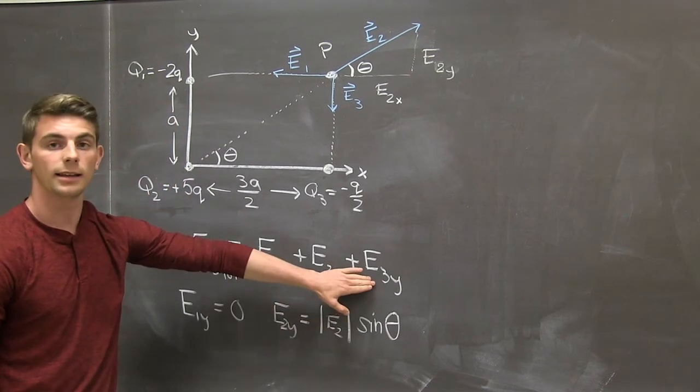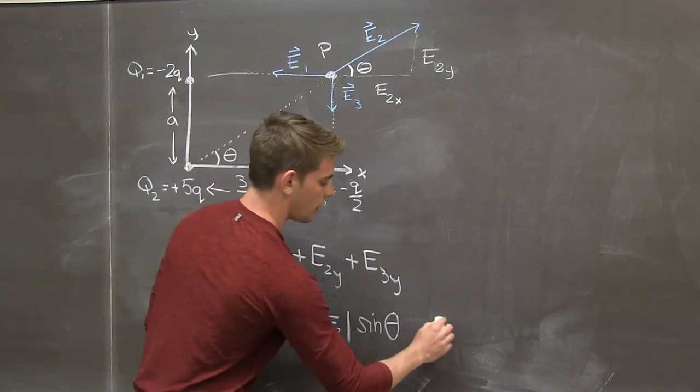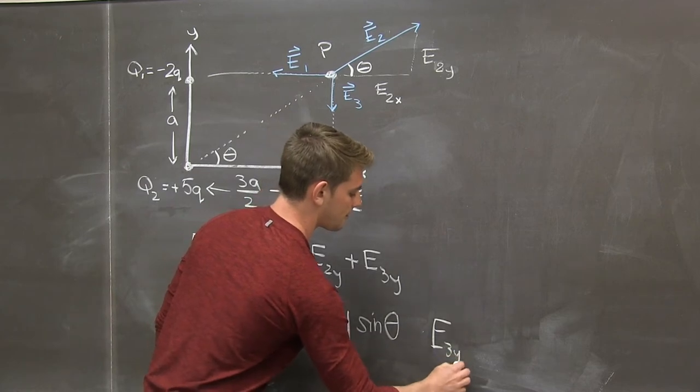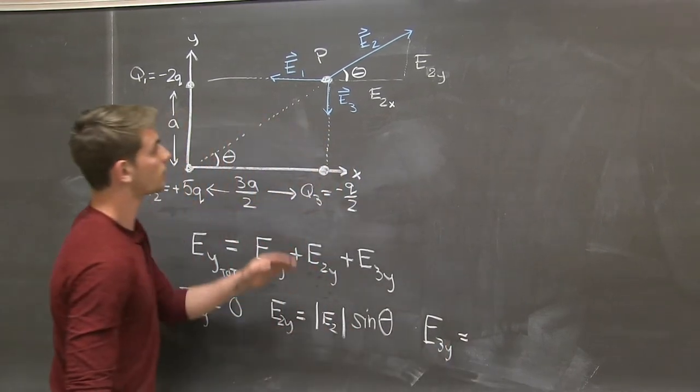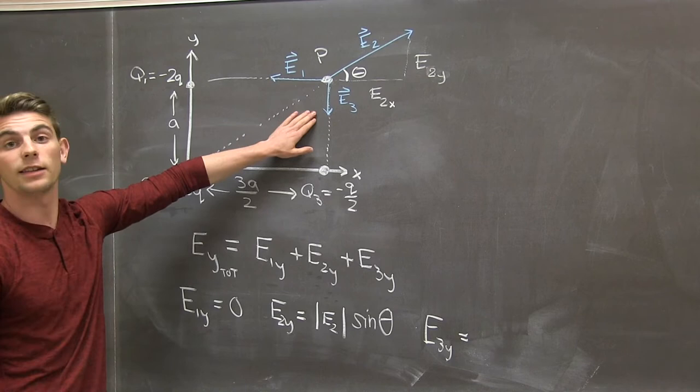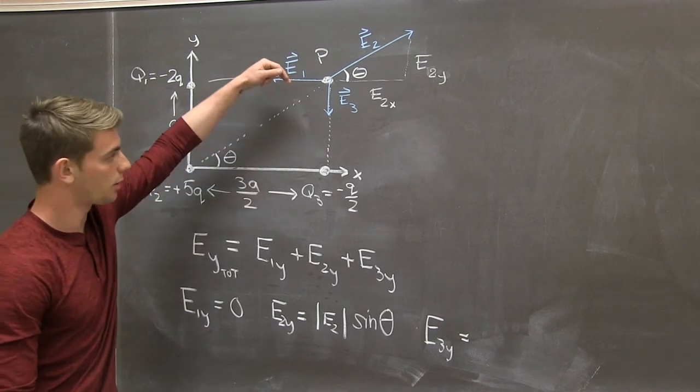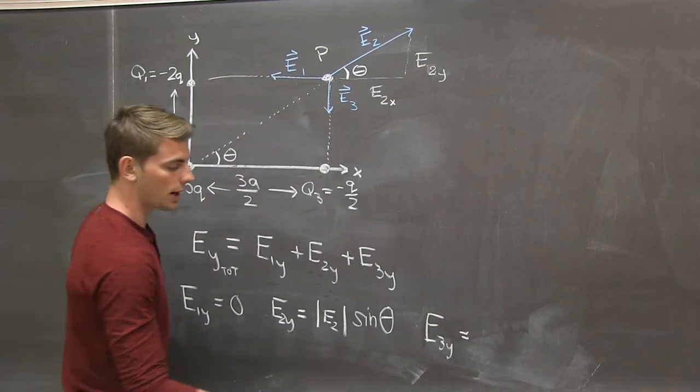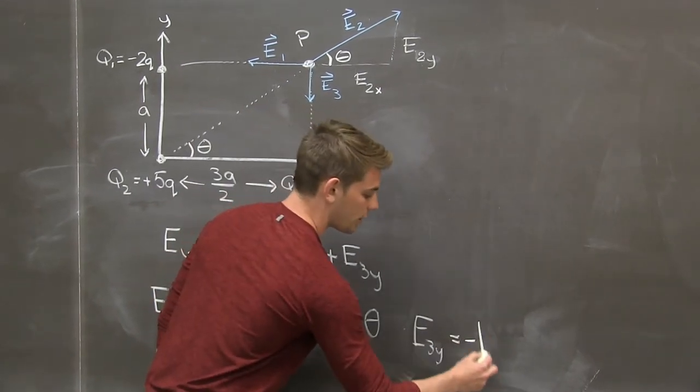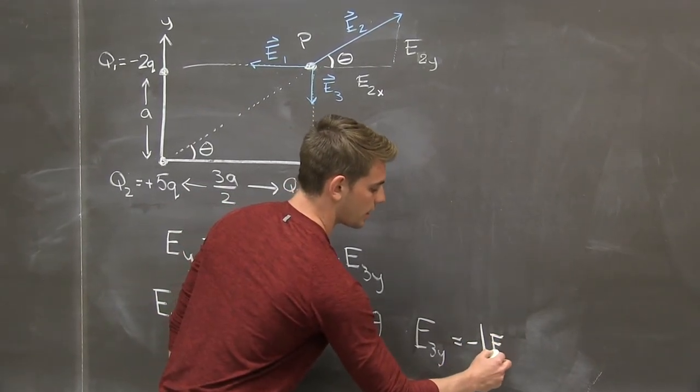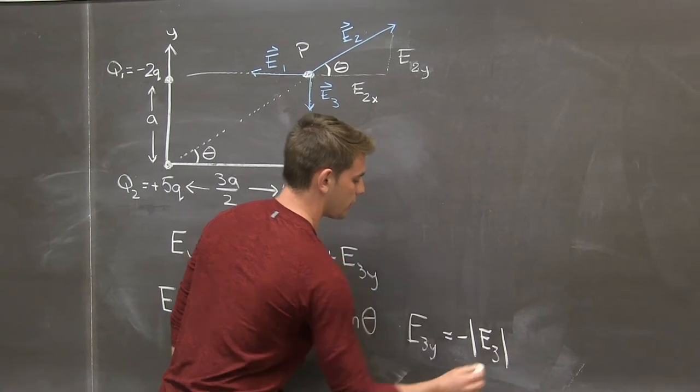And lastly, e3 in the y direction is guided by just seeing that all of e3 is pointing in that negative y direction. So there's no x component. That means that e3 in the y direction is negative the magnitude of e3.